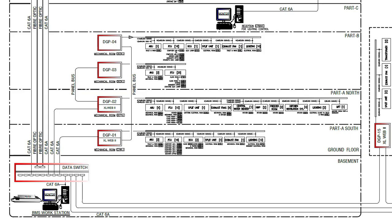Let's start with the basement. In the basement we have a BMS workstation installed and along with it we have a data switch for the network. This is the main data switch where all BACnet IP cables from the DGPs are connected. For small buildings you may have a separate network for the BMS, but in large buildings BMS is mostly connected to the existing IP network and the IT team provides a separate VLAN. In this building we had a separate network for the BMS, so this data switch is installed and CAT6 and fiber optic cables from the DGPs are connected to this network.